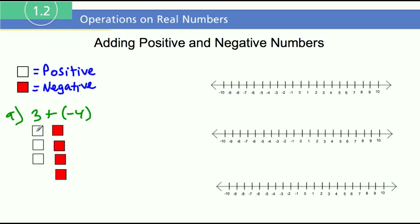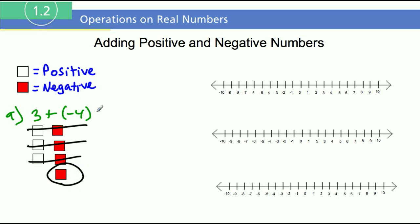So for this positive and negative, those cancel out, those cancel out, and those cancel out. Notice what we have remaining: we have 1 red square. The red squares represent negative, so you can say that this equals negative 1. Because of the extra negative, there's only one red square remaining.